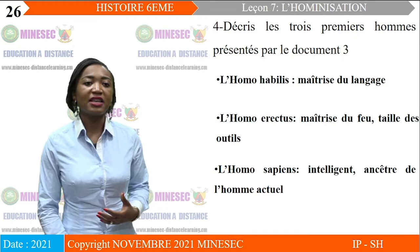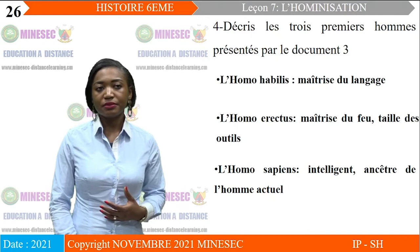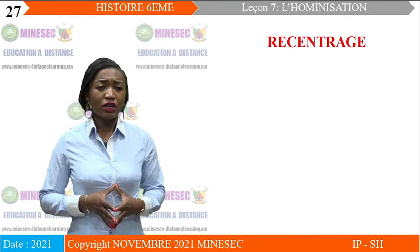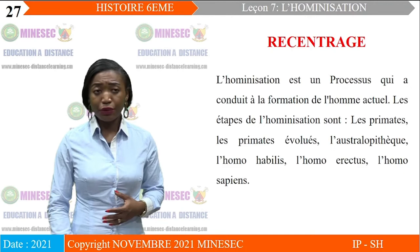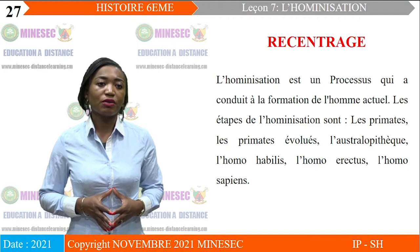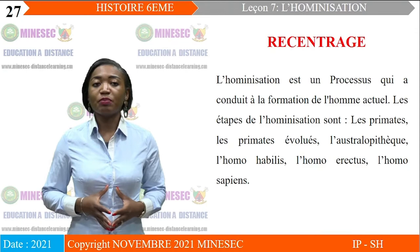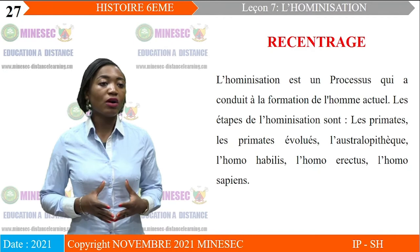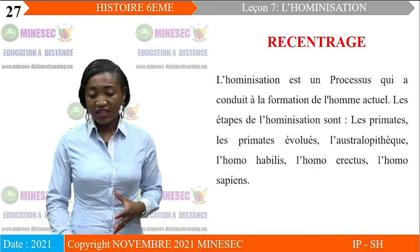Nous allons passer au résumé en ce qui concerne cette première séquence d'apprentissage. Nous pouvons retenir que l'hominisation est un processus qui a conduit à la formation de l'homme actuel. Les étapes de l'hominisation sont : les primates, les primates évolués, l'australopithèque, l'homo habilis, l'homo erectus, l'homo sapiens.